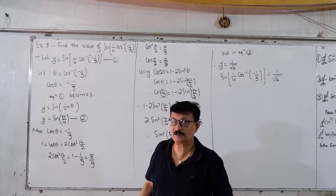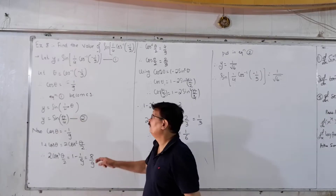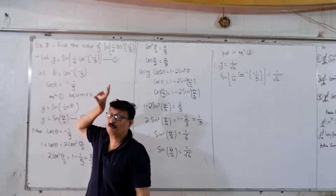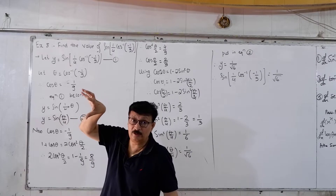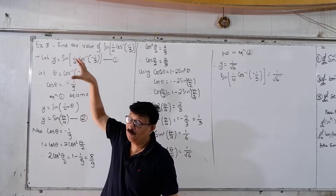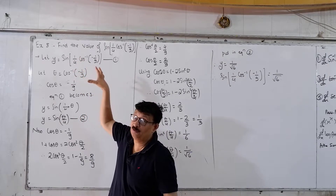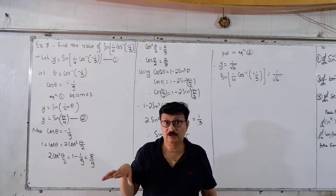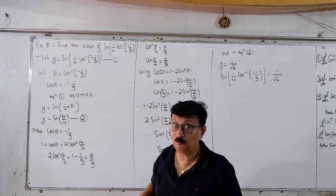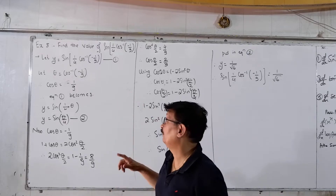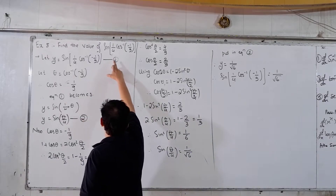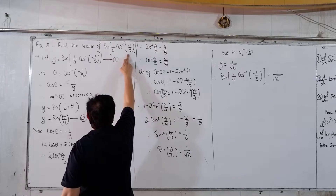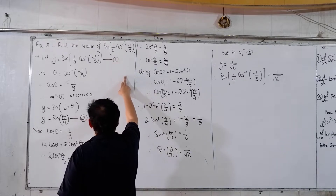This is a very difficult example — Example 8 from Module 20. This may be asked in JEE Mains 2020. Find the value of sin of (1/4) · cos⁻¹(−1/9).